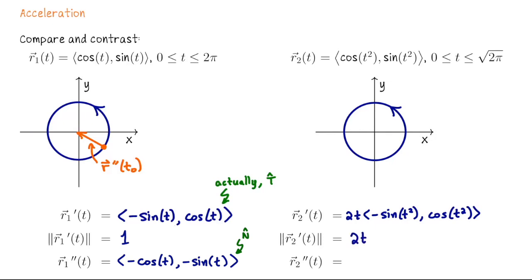This parametrization starts with a speed of 0, which we typically don't allow, but it's okay because it's right at the starting point — after that the velocity vector is never zero. If we compute the acceleration vector using the product rule, we get a larger expression.